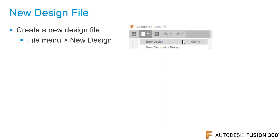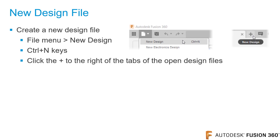To create a new design file inside of Fusion 360, either go from the File menu and click New Design, press Ctrl and the N key, or click the plus symbol, which will be to the right of the tabs of any open document files.